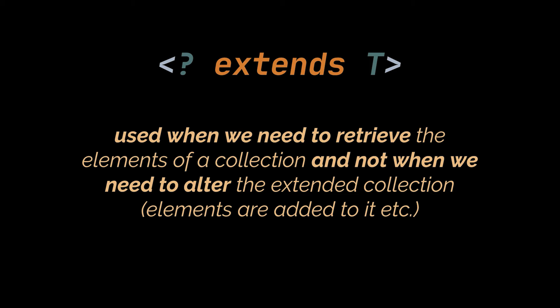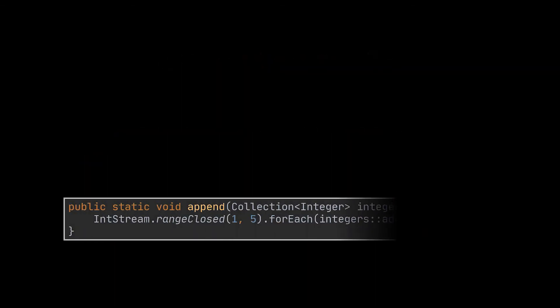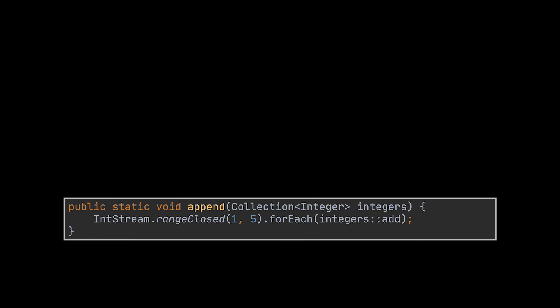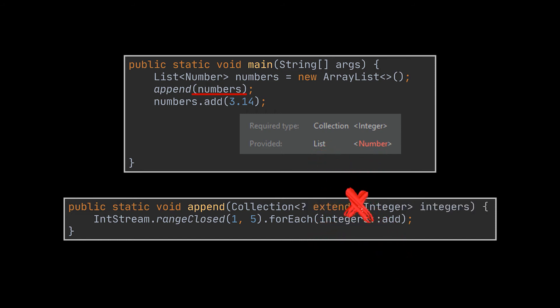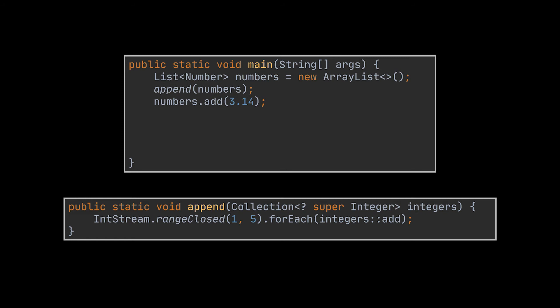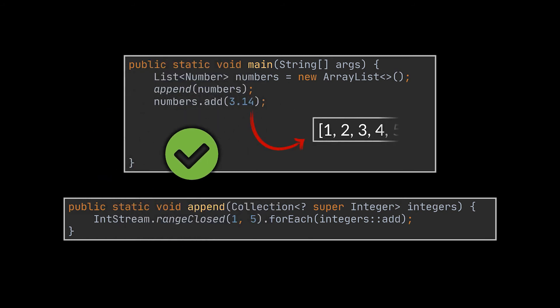Now suppose we have a method that adds integers from 1 to 5 into a passed collection, and we have a List of Number into which we want to add those integers. The method accepts a Collection of Integer, so passing a List of Number is illegal. The extends wildcard can't help here since Number is a supertype of Integer, not a subtype. The super wildcard is the solution — after updating the method signature, it is now legal to pass our List of Number.